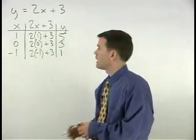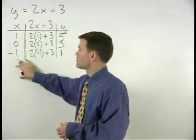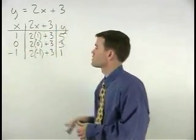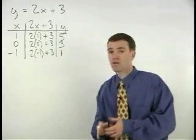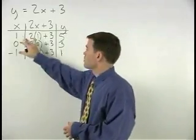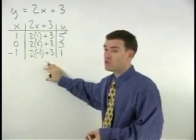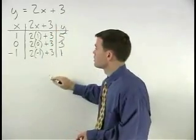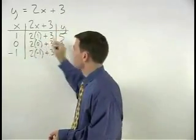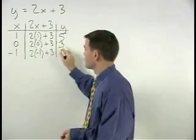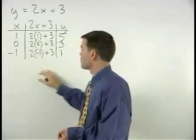I would always choose at least 3 values to plug into the equation for x. Notice that we now have 3 points that we can use to graph this equation. And our points are 1, 5, 0, 3, and negative 1, 1.